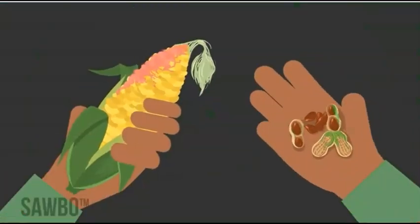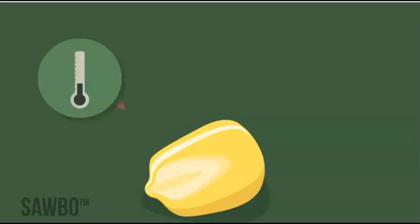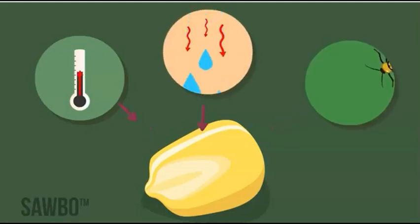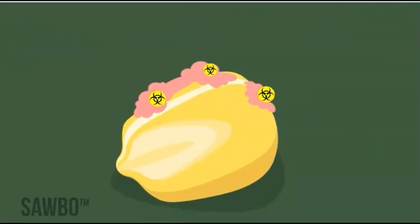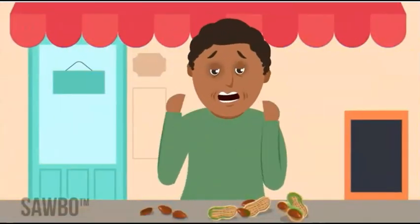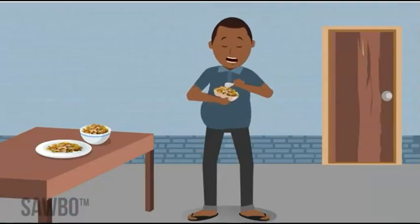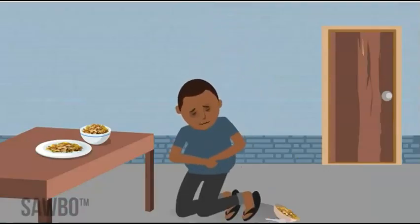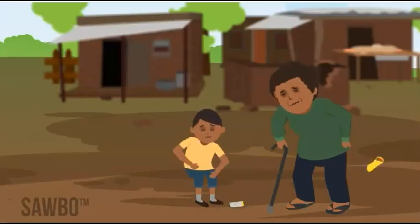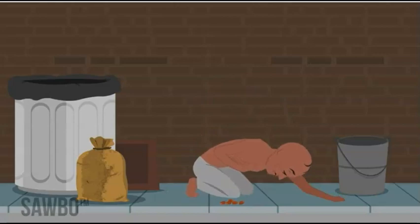Different molds produce different toxins. Some are called aflatoxins, others are called fumonisins. When temperature, moisture, and other conditions are right, molds can grow on crops or food and produce these toxins. If you eat food contaminated with mycotoxins, you can become very sick. Symptoms of sickness will differ depending on which mold was growing on the food. Other factors that influence symptoms include the amount of contaminated food eaten, the age, and the health of the affected individual. Mycotoxin poisoning may worsen if the person ingesting the contaminated food is already sick or malnourished.